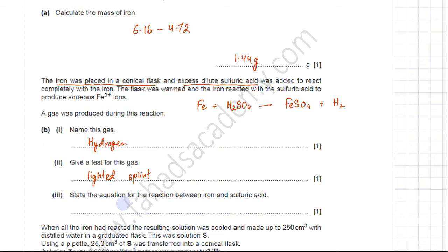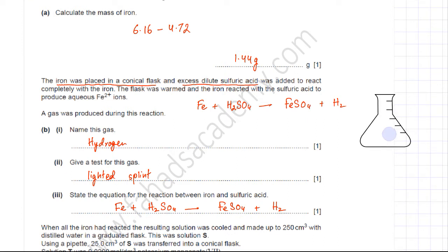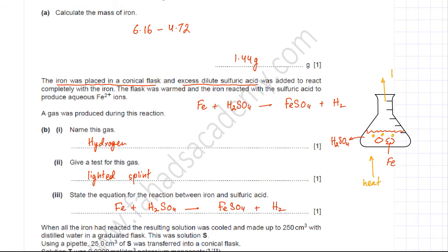The equation for the reaction is: Fe + H₂SO₄ → FeSO₄ + H₂. Iron granules were placed into a conical flask containing sulfuric acid solution, the mixture was warmed, and bubbles of hydrogen gas escaped. The salt FeSO₄ was also formed in solution. This is what happens in the first step.